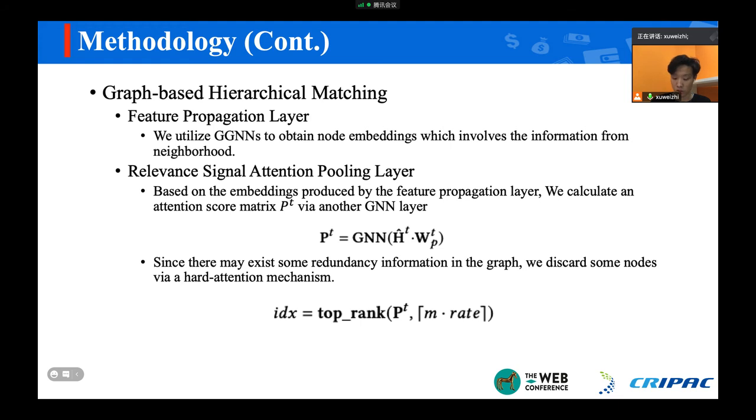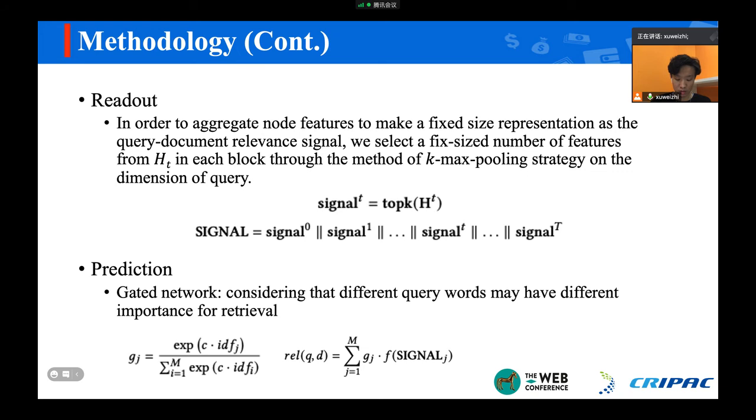Based on the attention score, we employ a hard attention mechanism to discard nodes so that redundancy information that is not related to the task will be abandoned. In order to aggregate node features to make a fixed-size representation as the query-document relevance signal, we select a fixed-size number of features via the max pooling strategy. Eventually, considering that different query words may have different importance for retrieval, we further provide a gated network to measure the contribution of each word in the query.